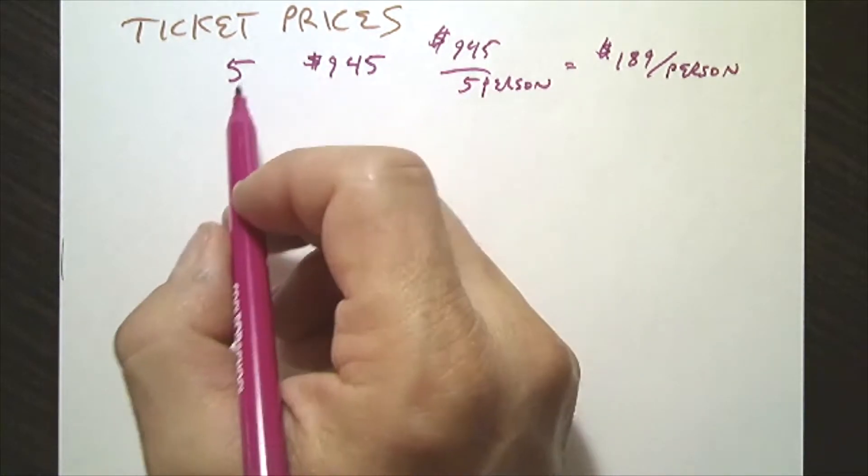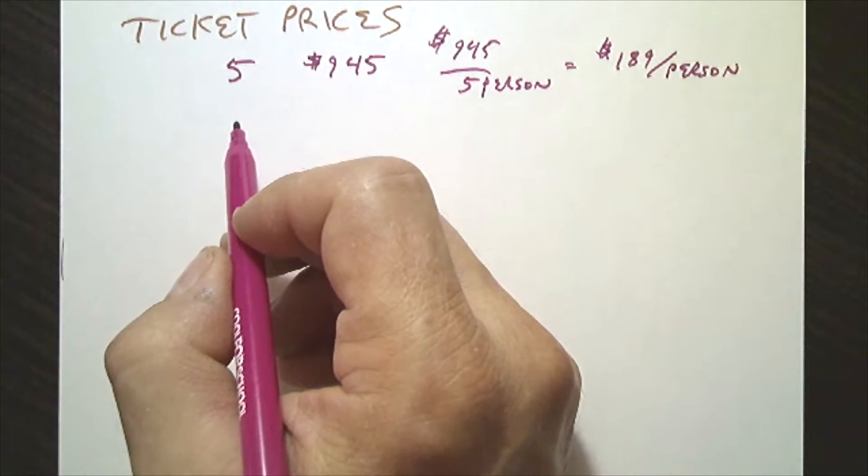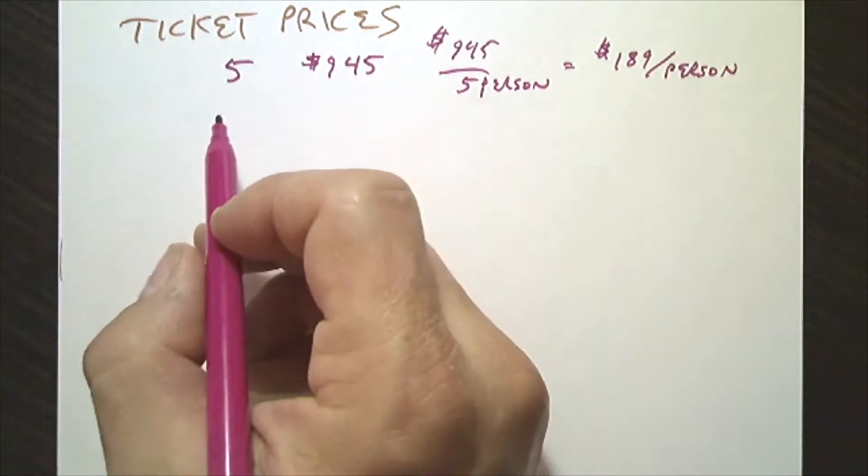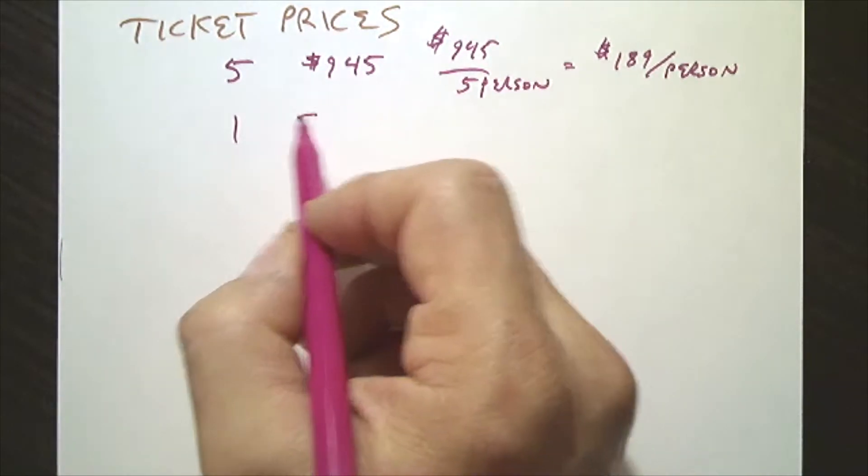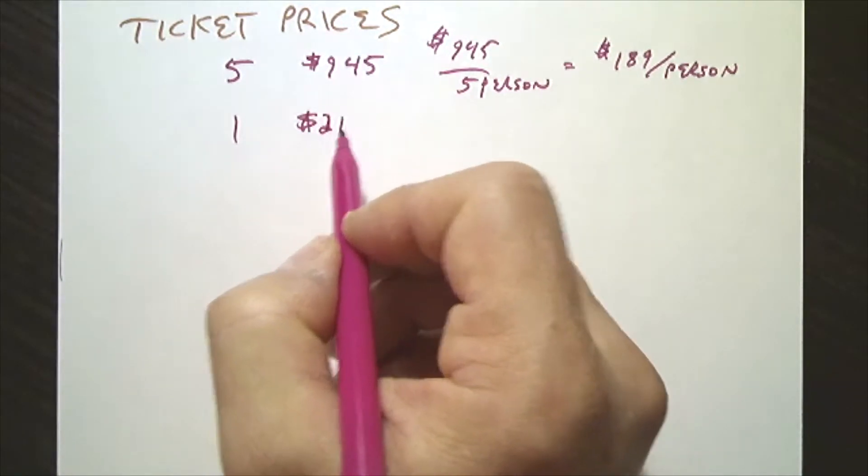So another friend, a sixth friend, purchases and says, oh, I want to join the trip. So they do the same arrangement, same time, right after that, and they pay $210.